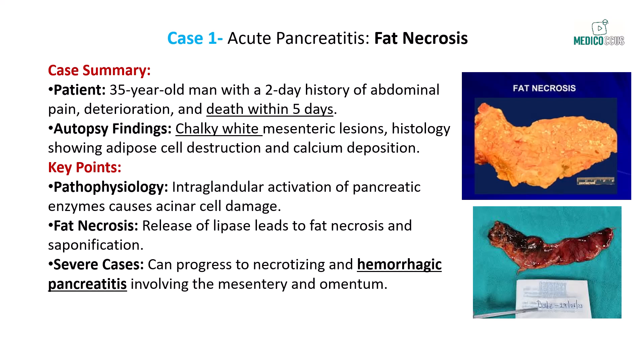In mild cases of acute pancreatitis, fat necrosis may be confined to the pancreas and the surrounding areas. However, as the inflammation progresses, acute necrotic pancreatitis can develop. This severe form is characterized by extensive fat necrosis that spreads to the mesentery, omentum, and other parts of the abdominal cavity, driven by widespread lipase activity. Additionally, elastase-mediated destruction of blood vessel walls can lead to hemorrhage within the necrotic areas, resulting in hemorrhagic pancreatitis. This may present grossly as black hemorrhagic areas, further complicating the clinical picture.